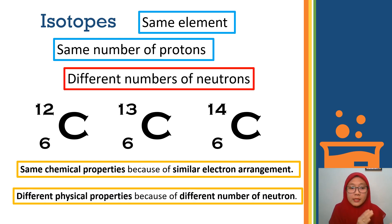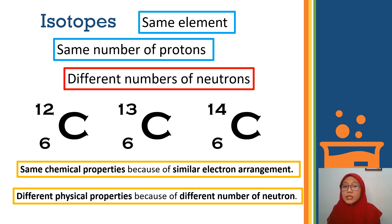However, isotopes have different physical properties. This is due to the different number of neutrons.